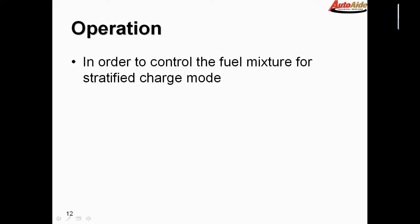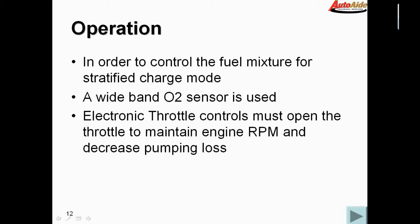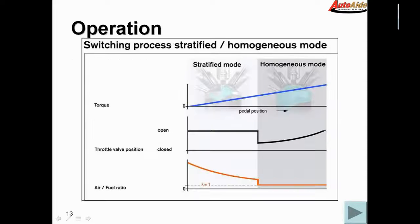In order to control the fuel mixture for stratified charge mode, an oxygen sensor is not going to be able to cut it. Most of these engines use a wideband oxygen sensor to control or measure fuel mixture. Electronic throttle controls are also utilized. One of the main inefficiencies of a gasoline engine is the need to throttle it, which results in pumping loss. The engine is actually working harder to pull the air in than it should because of that throttle plate. That's one of the reasons why an EGR valve can actually increase fuel economy, because it means we have to open the throttle a little bit further and reduce pumping loss.